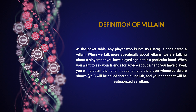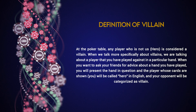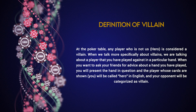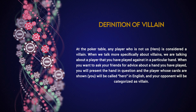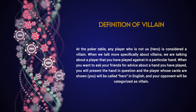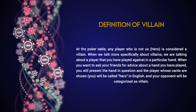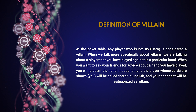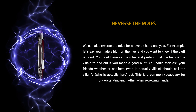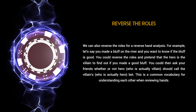When we talk more specifically about villains, we are talking about a player that you have played against in a particular hand. When you want to ask your friends for advice about a hand you have played, you will present the hand in question. The player whose cards are shown will be called hero in English, and your opponent will be categorized as villain. We can also reverse the roles for a reverse hand analysis.